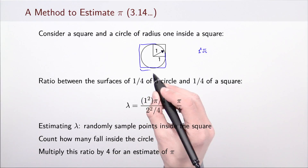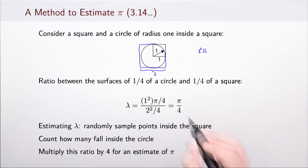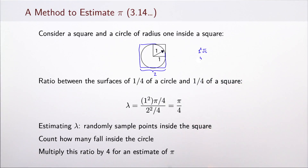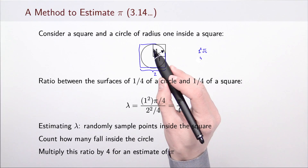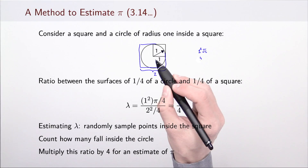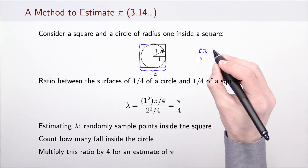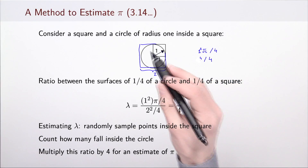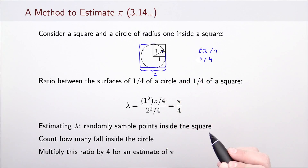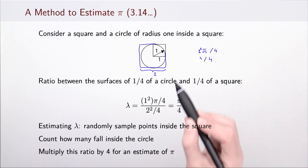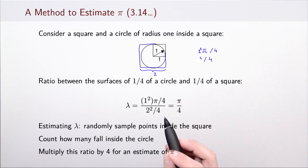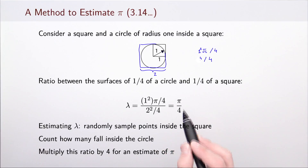The side of the square is then 2, so the surface of the square itself is 2 squared, which is 4. We can look at one quarter of this entire picture: the surface of a quarter circle is pi over 4, and a quarter of the square is also 1. So if we compute the ratio between the quarter circle and quarter square, we get pi over 4.